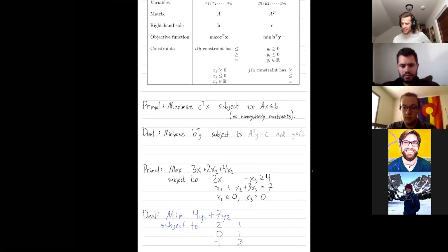Hopefully I did that correctly. The 2 is really going to be 2y1. That 1 is going to be plus y2. And then the 0 and 1 just becomes a y2. And then the negative 1 and 3 becomes negative y1 plus 3y2.